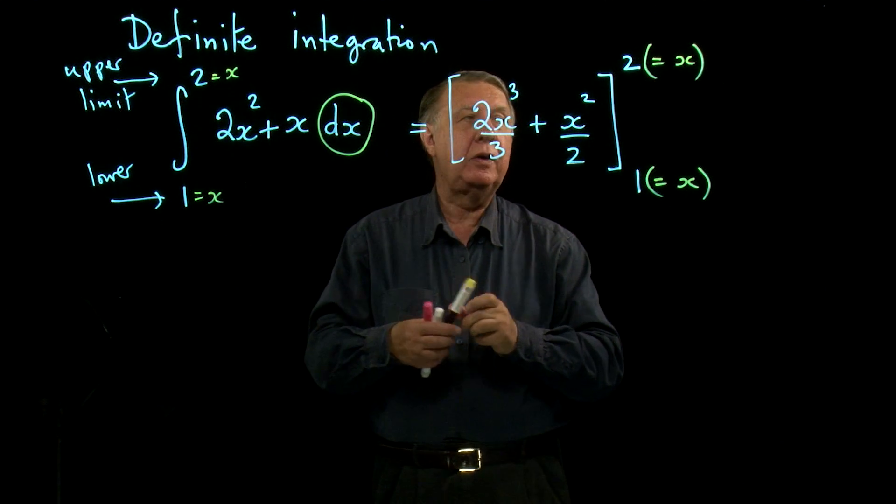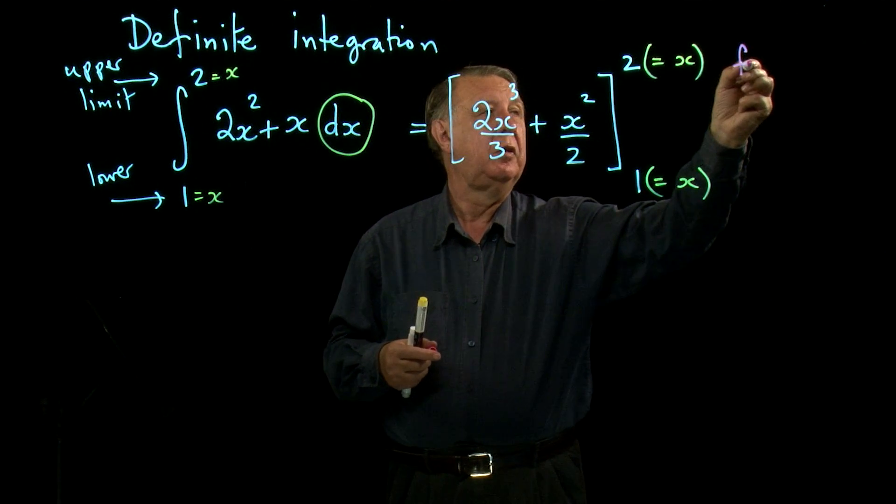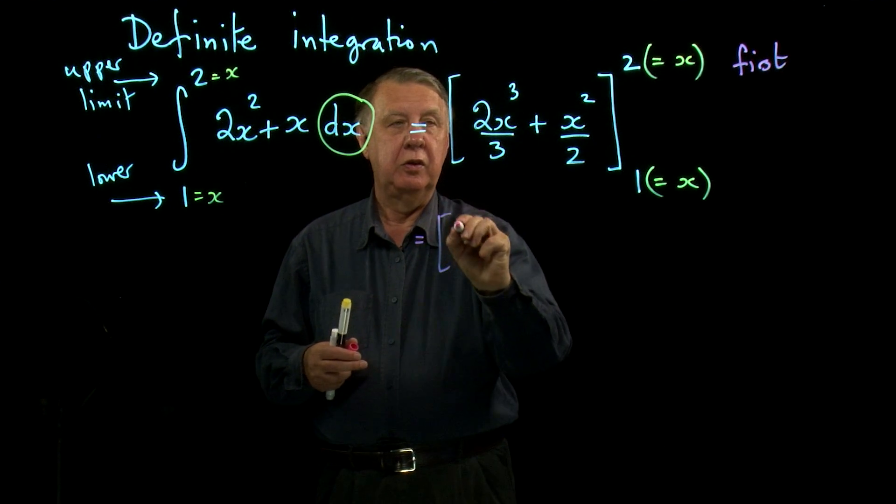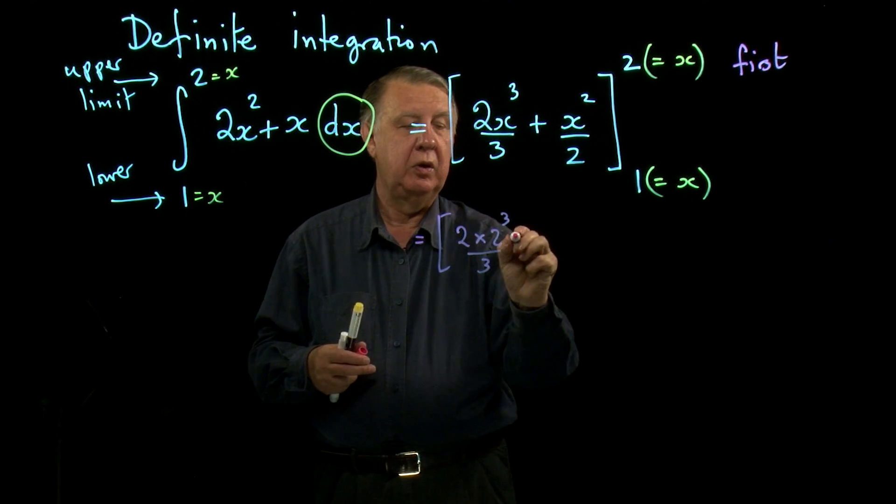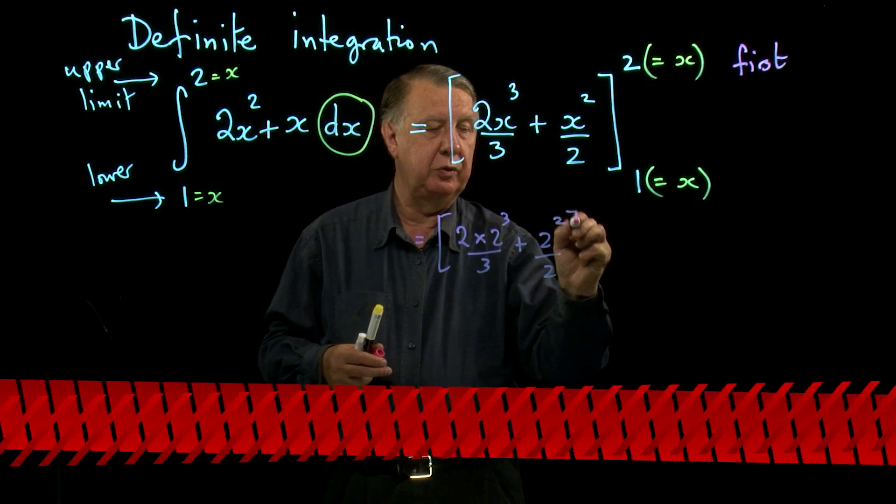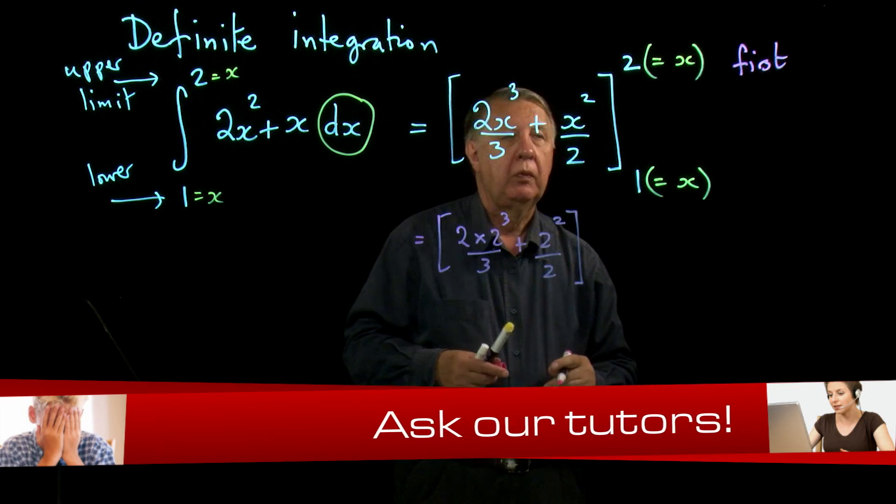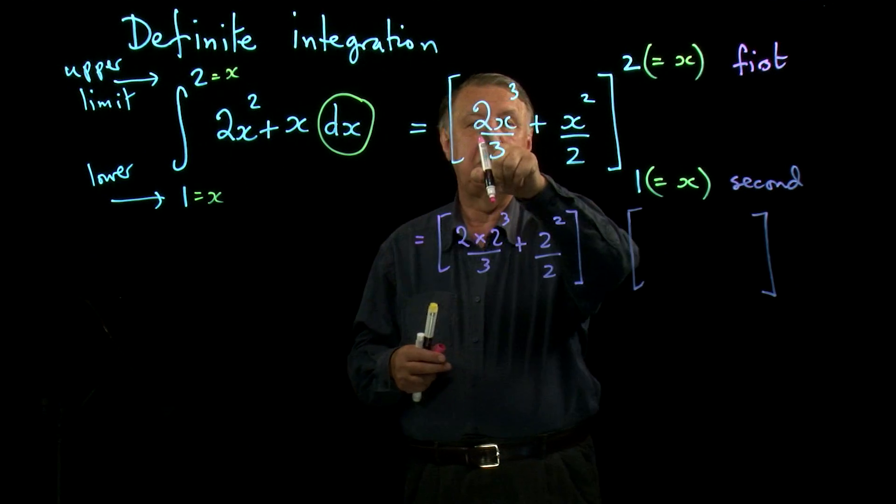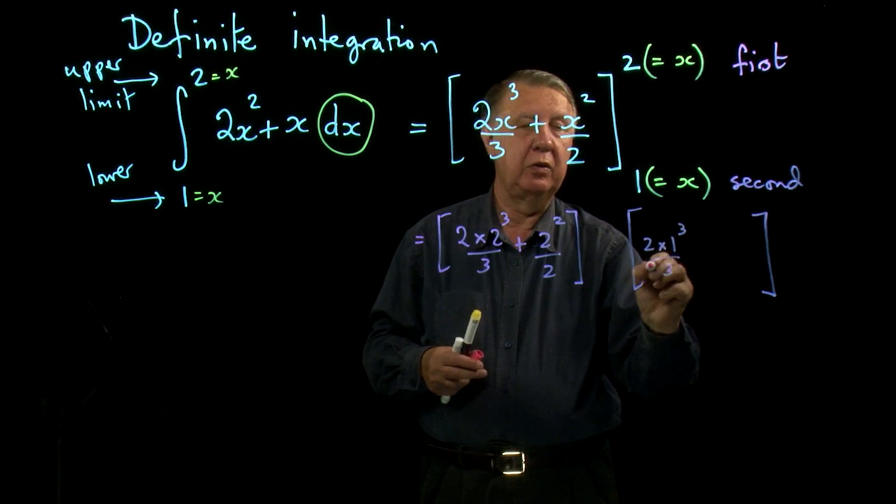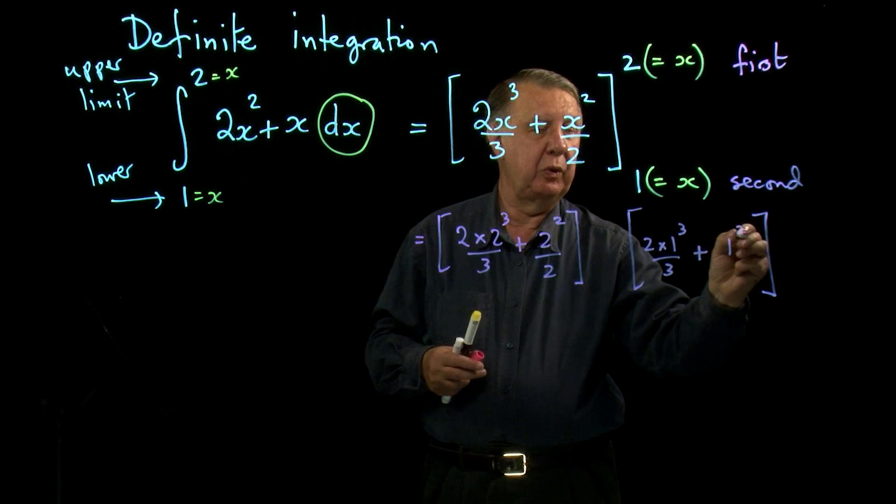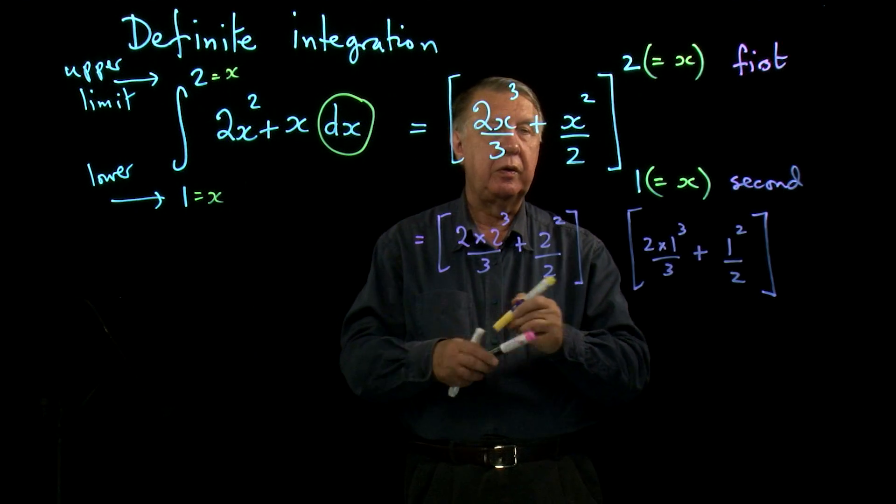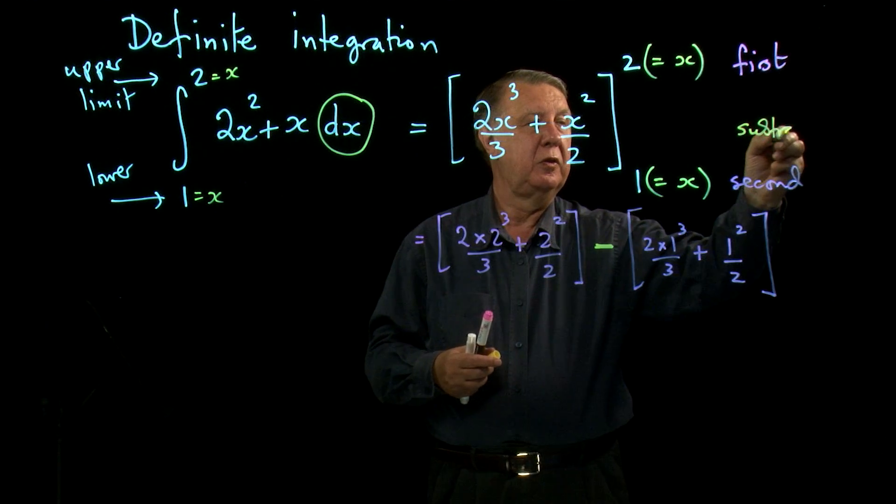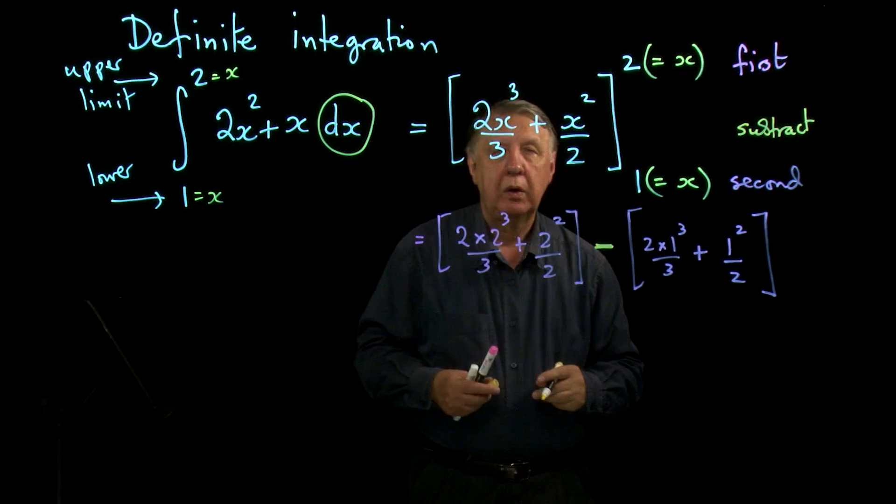What do we do with those values of X? We substitute them into here and you work with the top number first. So you put X equals 2 into this: 2 times 2 cubed over 3 plus 2 squared over 2. You then take the second value of X and substitute it in for X: 2 times 1 cubed over 3 plus 1 squared over 2. And then the important bit to remember is you subtract, so it's first subtract the second.